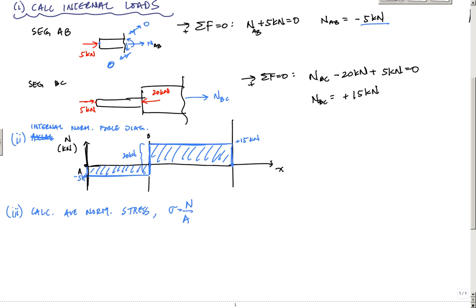And so here, for segment AB, segment AB, I've got a cross-sectional area. AAB is pi over 4 times the diameter of AB squared, which would be pi over 4 times 20 millimeters squared, which is, let's see if I punch into my calculator real quick, is, I believe, 314.16 millimeters squared.